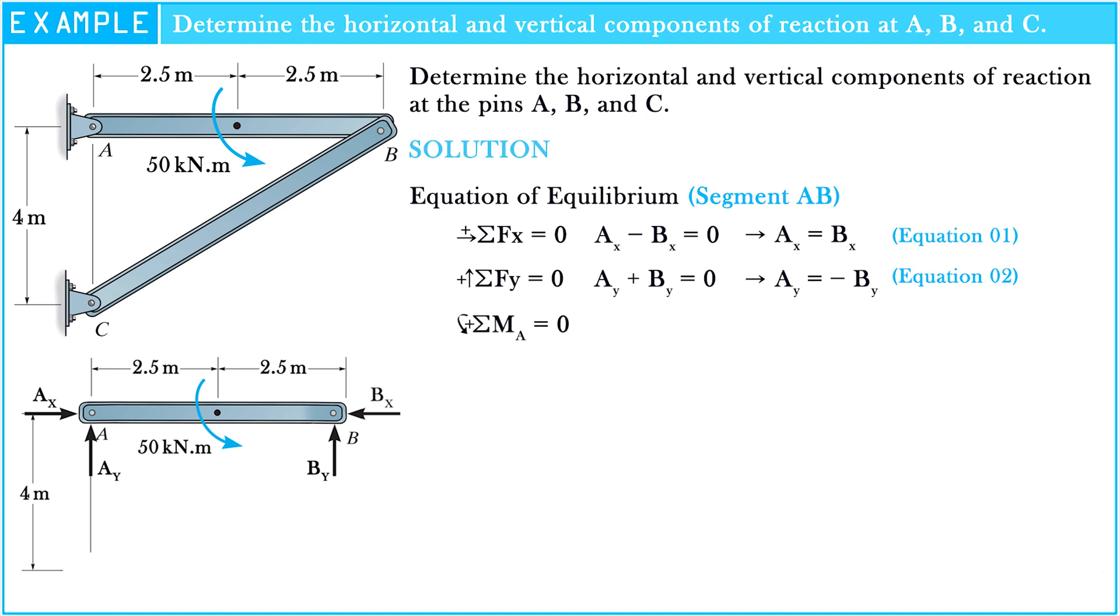The sum of moments at point A equals zero. So By multiplied by 5 meters plus 50 kilonewton-meters equals zero. Hence, through calculation, By equals negative 10 kilonewtons.